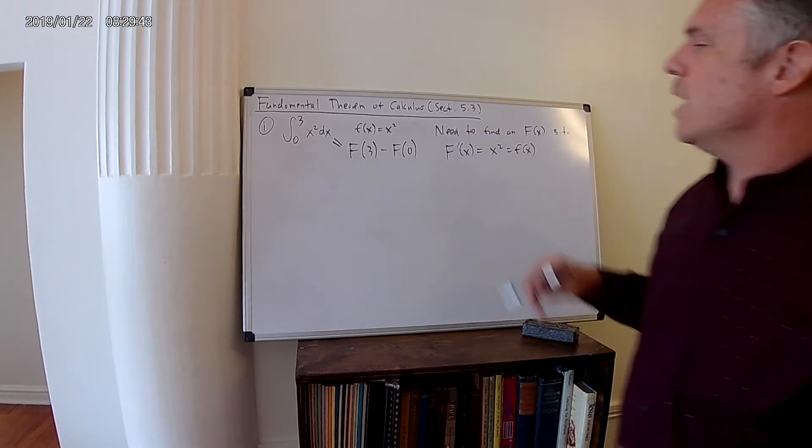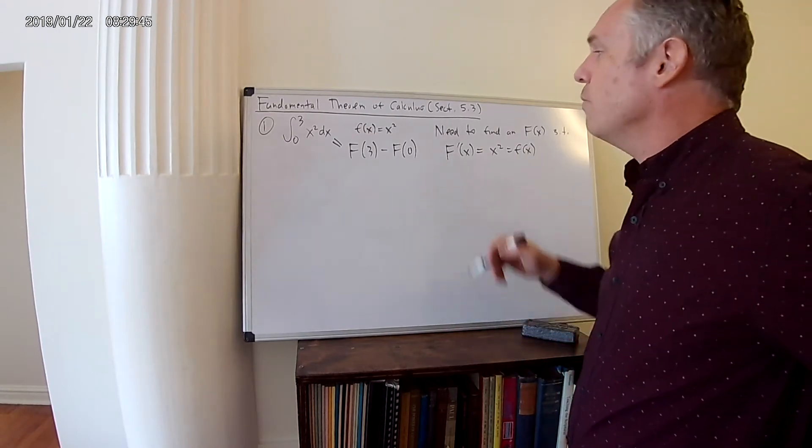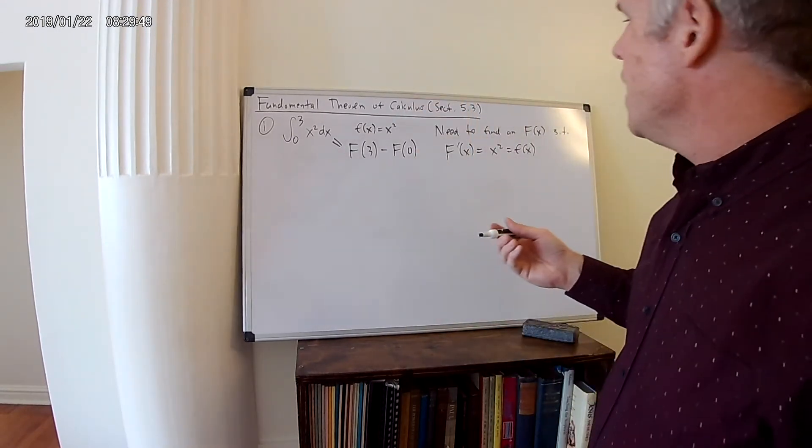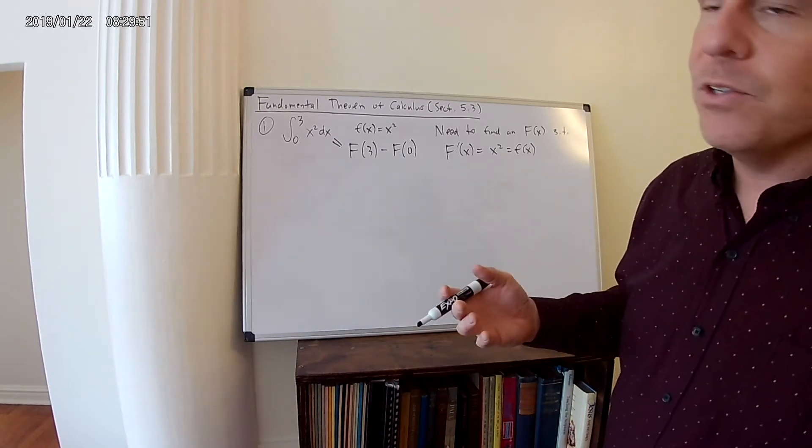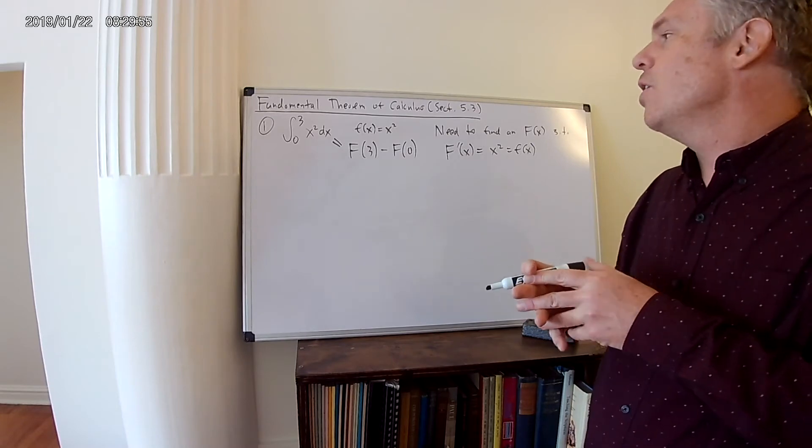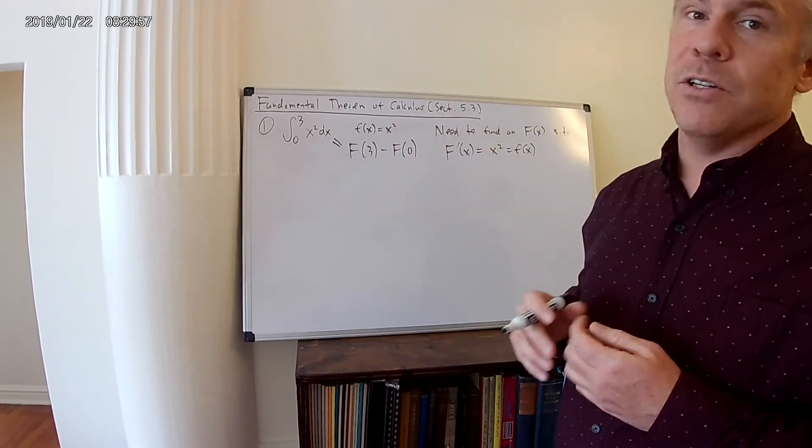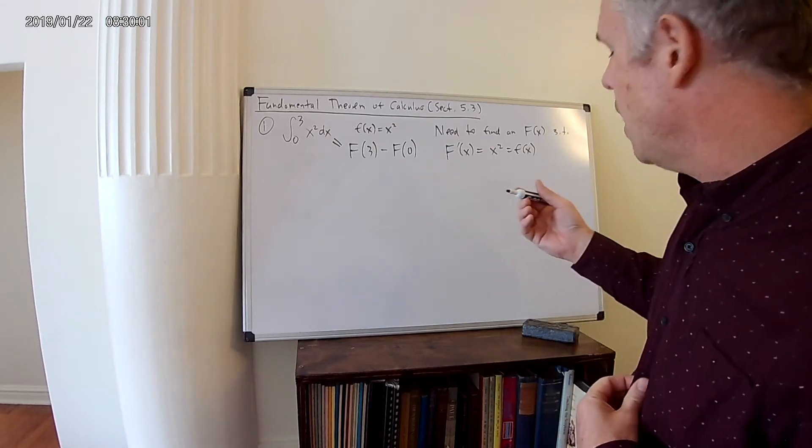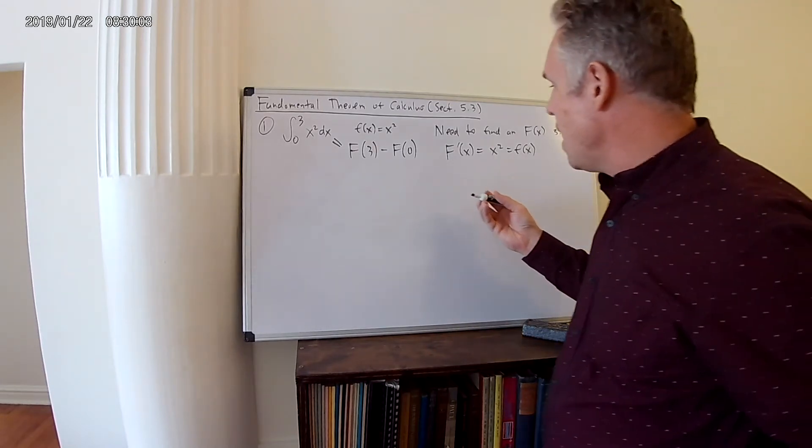So the real question is, can you guys think of a function where if we take the derivative of that function, we get x squared? And this is a little bit like going backwards. It's easy to take a derivative of a function. It's hard to guess a function whose derivative equals this function. So it's kind of like you're working backwards, you're like a detective. But we can do this.